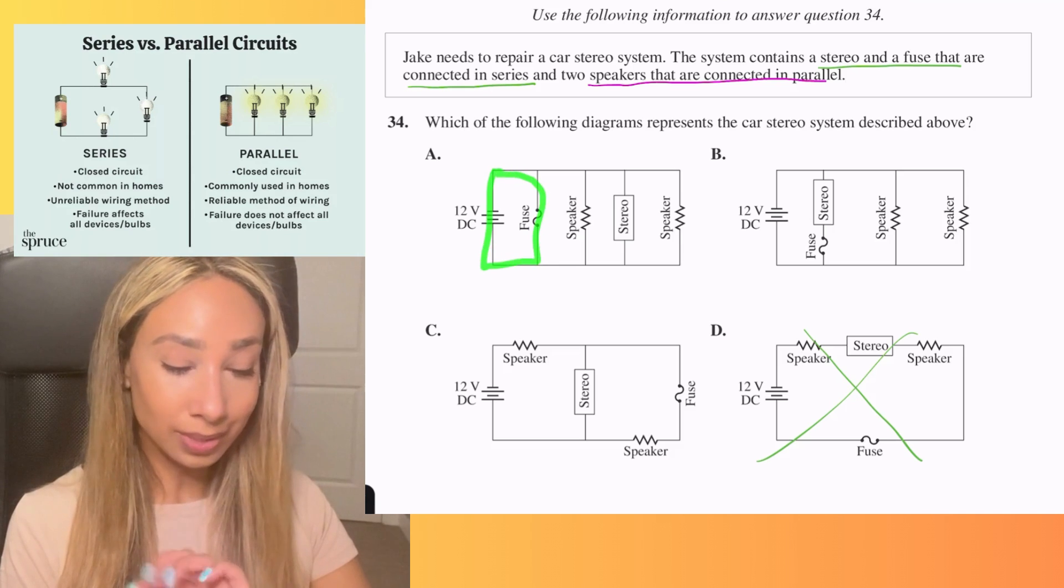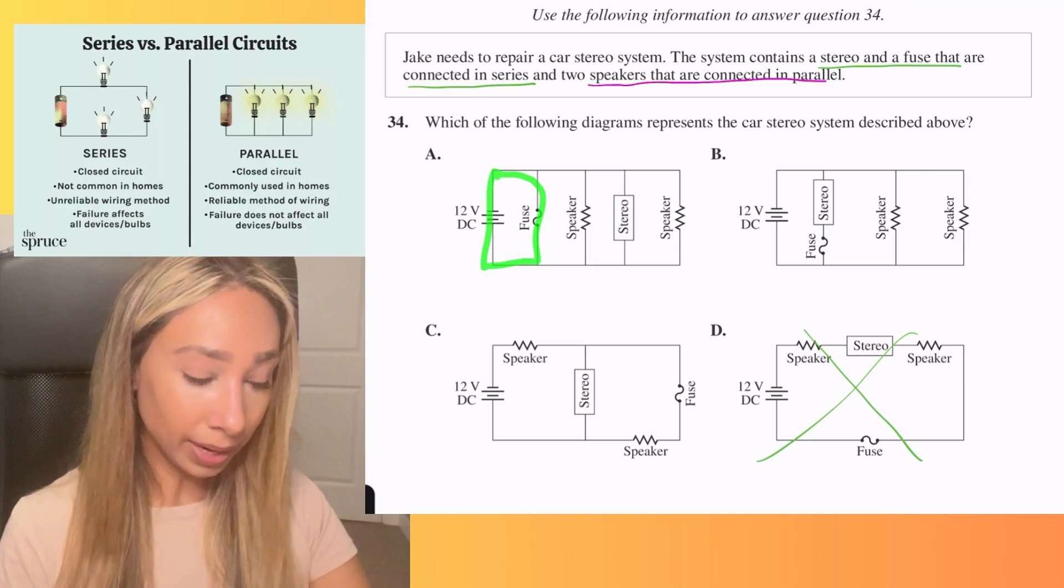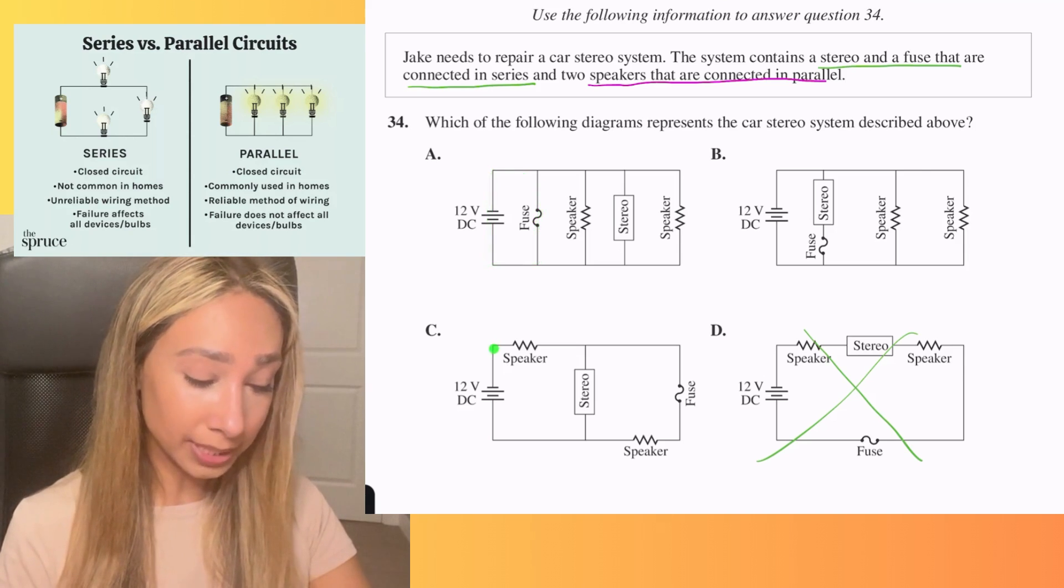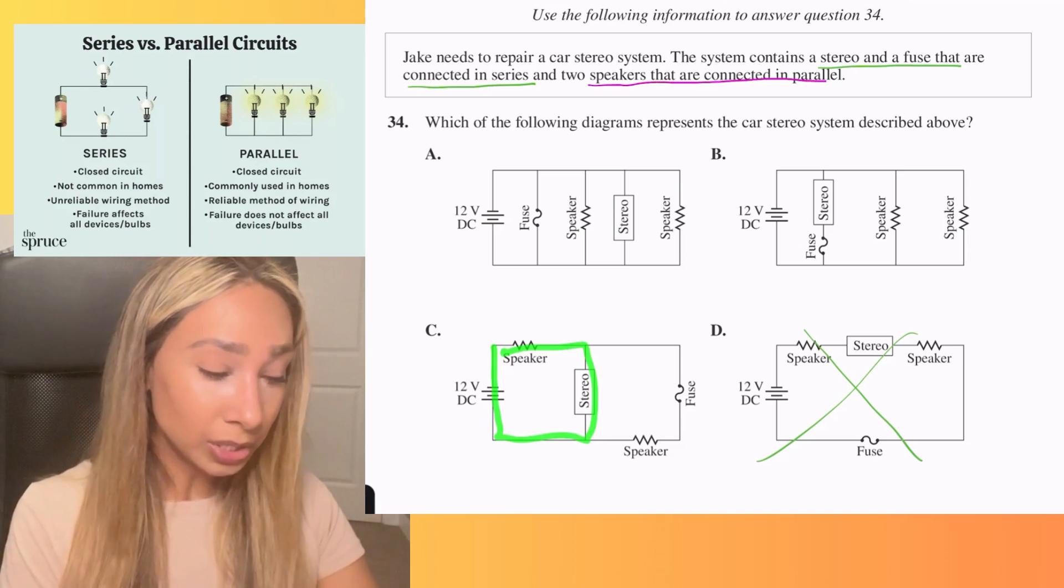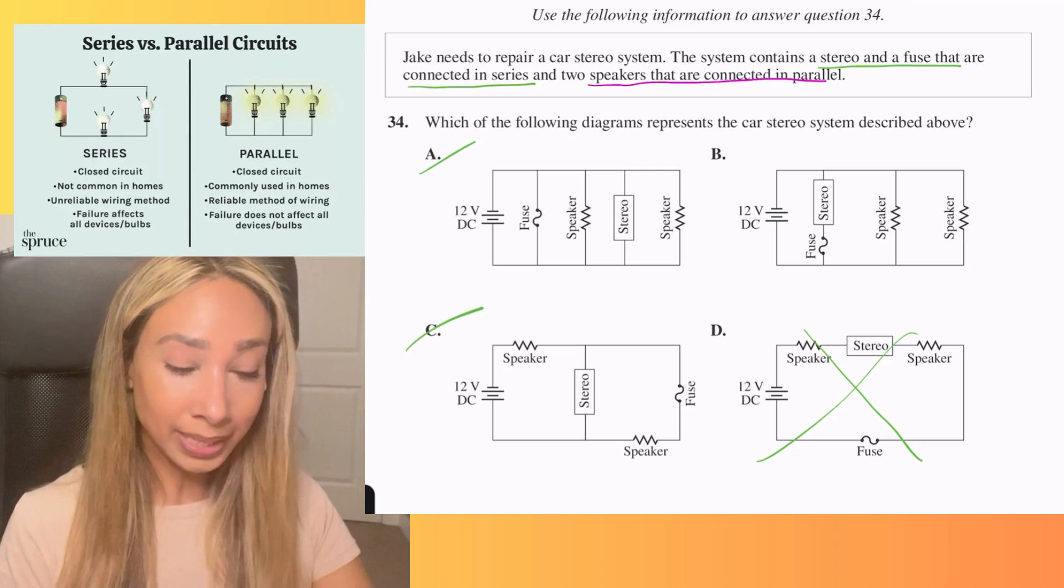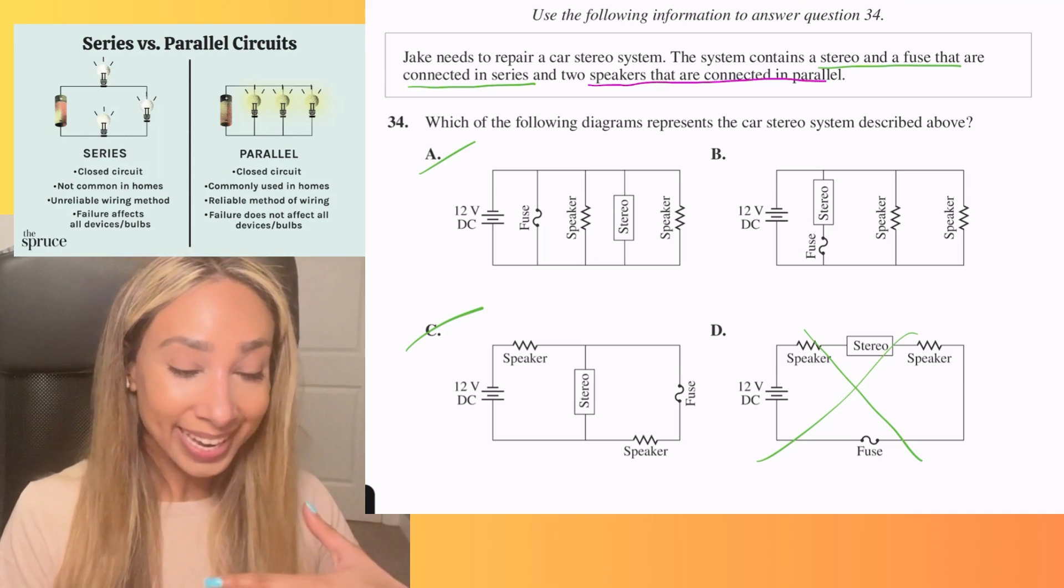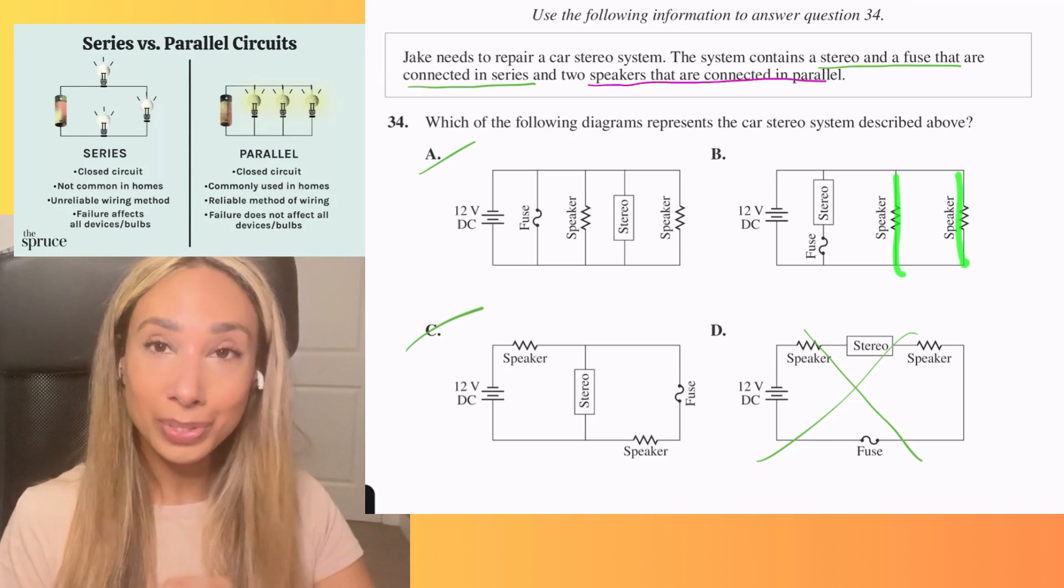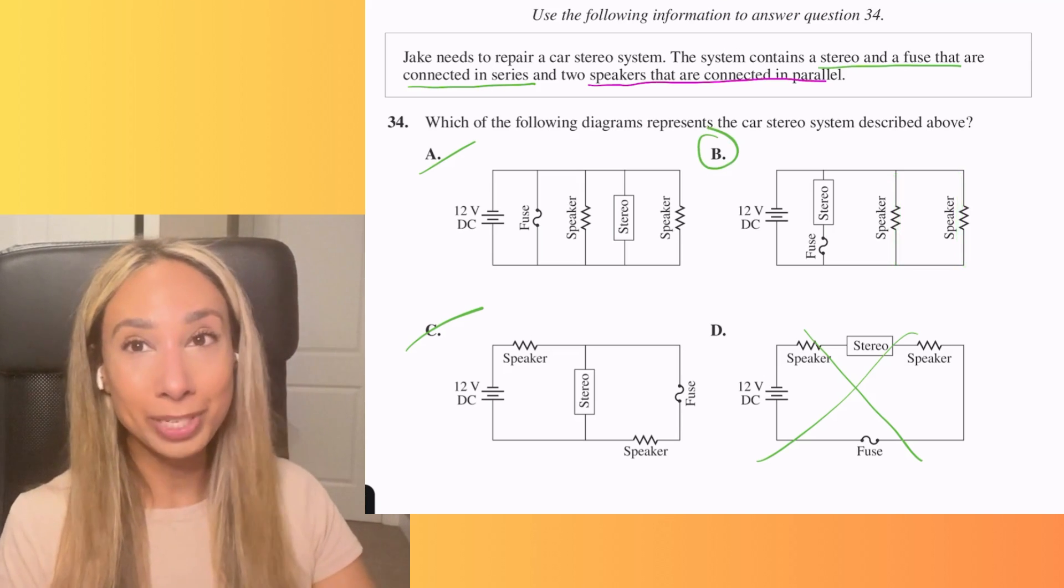If I look at option A and C, this one just has the fuse. It's not talking about the stereo. So that wouldn't work to fit the definition at the top there. And if I'm looking at option C, that is a series circuit, but it's only looking at the stereo. So A and C are also going to be eliminated, leaving us with option B. The other reason I know it's option B is if we look at both speakers, those are contained in a parallel circuit. So our answer for this question is option B.